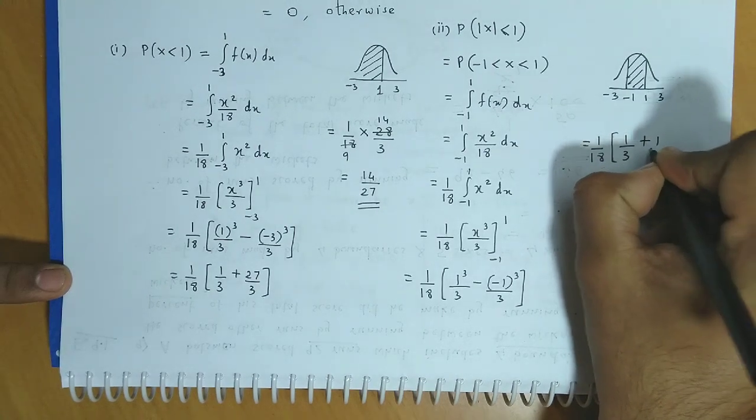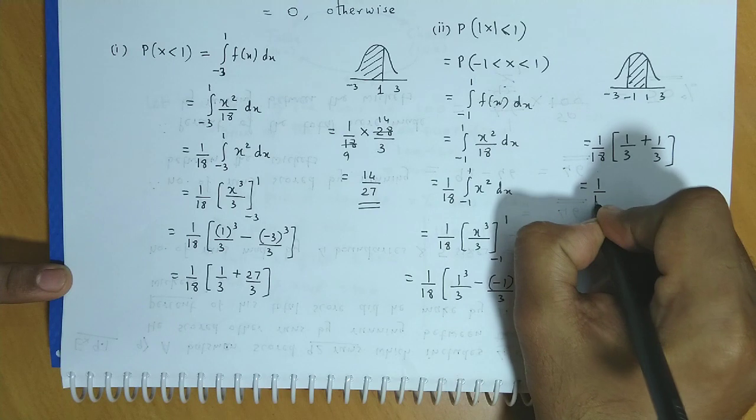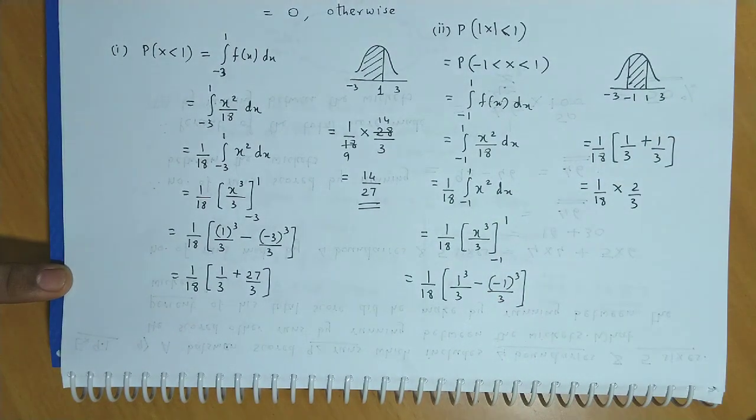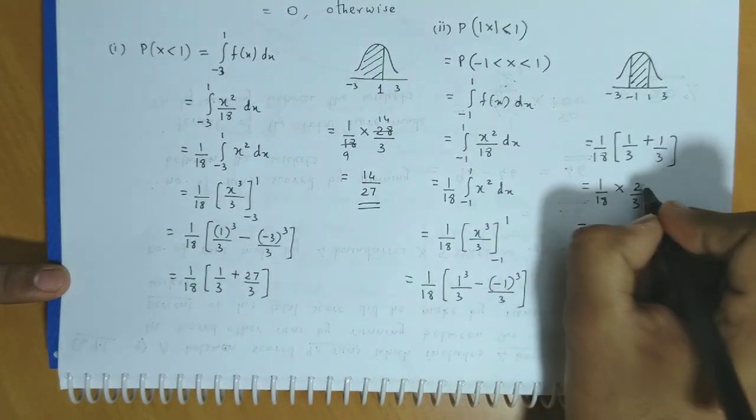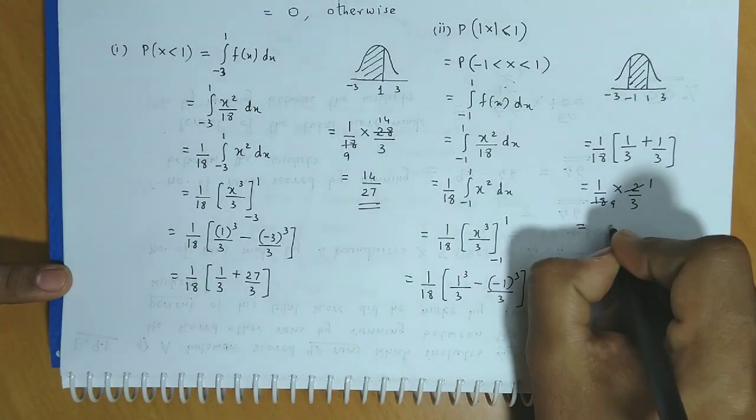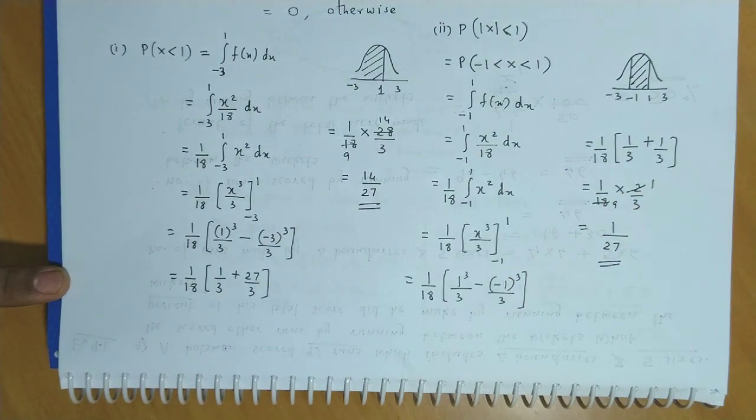So we have 1 by 18 into 2 by 3. Simplifying this, we get 1 by 27. So the required probability is 1 by 27.